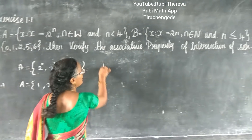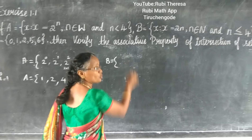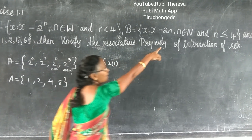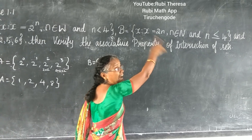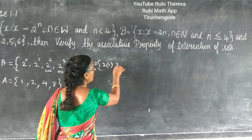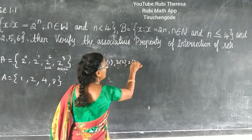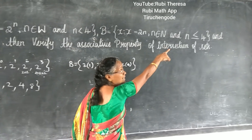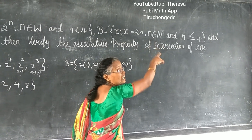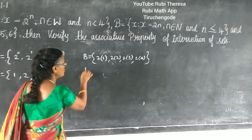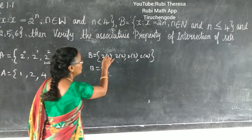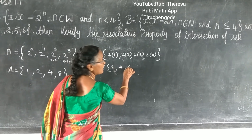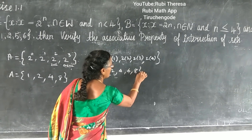So B equals 2 into N. Since N is an element of natural numbers: 2 into 1, 2 into 2, 2 into 3, 2 into 4. Why up to 4? Because N is less than or equal to 4. So B equals: 2 into 1 is 2, 2 2's are 4, 2 3's are 6, 2 4's are 8. Therefore B = {2, 4, 6, 8}.